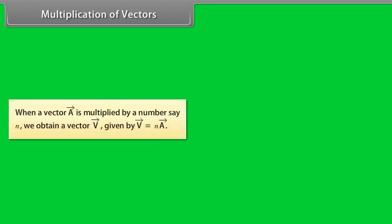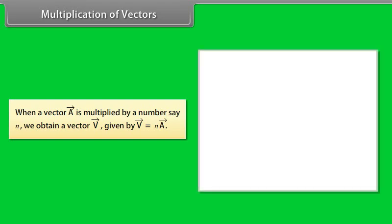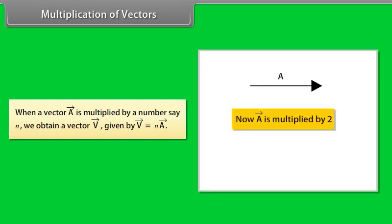When a vector A is multiplied by a number, say n, we obtain a vector V given by: V⃗ = n · A⃗. For example, if vector A is multiplied by 2, the resultant vector 2A⃗ is in the same direction as A⃗ and has a magnitude twice that of A⃗.